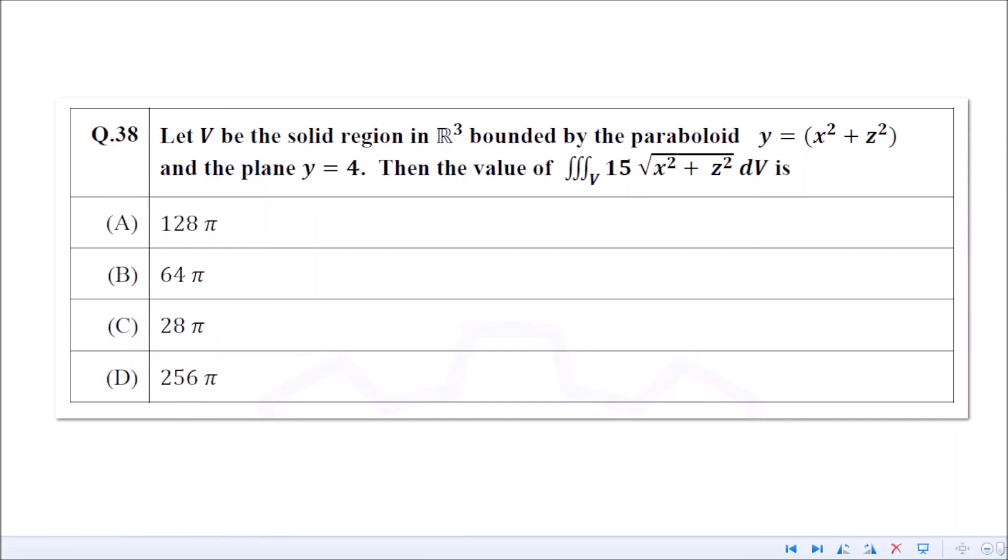So in cylindrical coordinate system, we usually put x = r cos θ, y = r sin θ, and we keep z = z, right? Usually this is what we do.